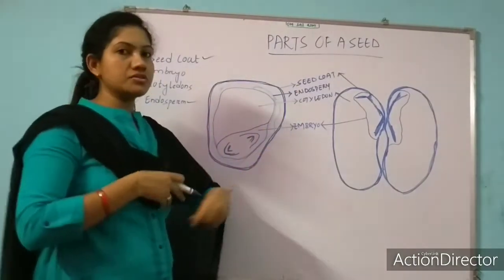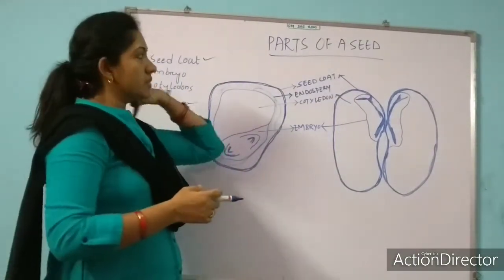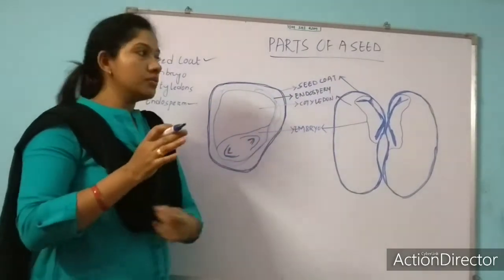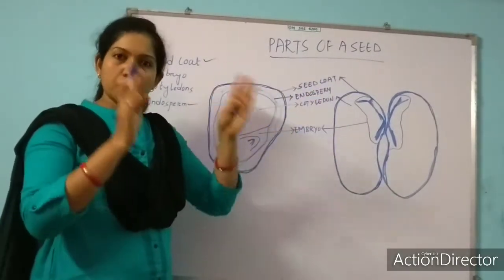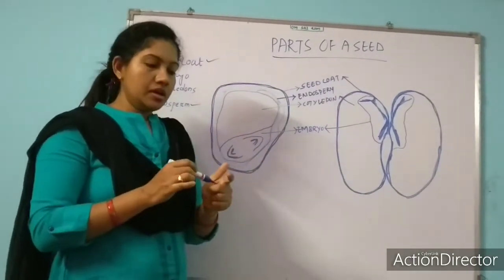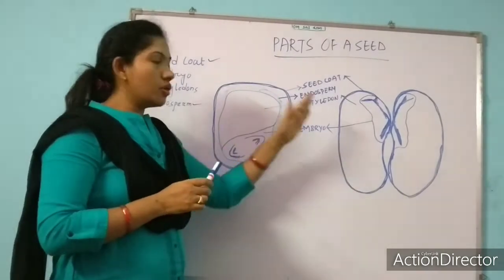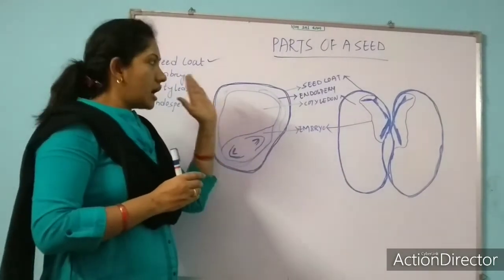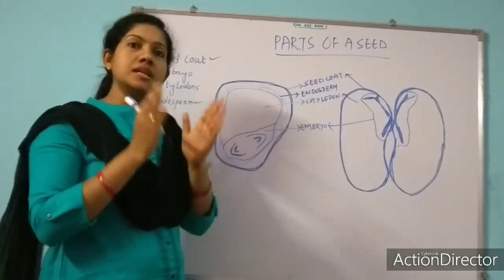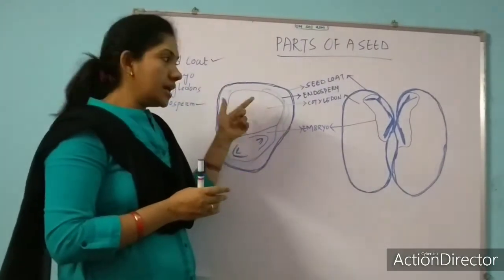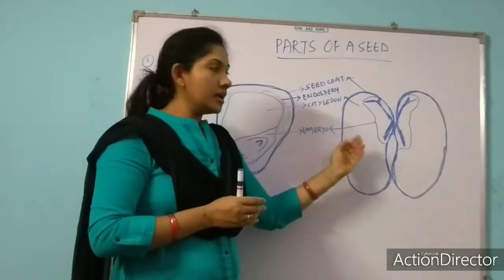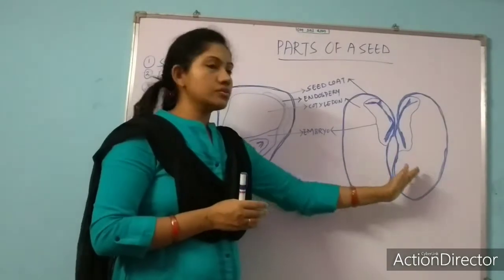So these are the four parts we have discussed. The first part is the covering of the seed — we call it seed coat, which protects the seed. After seed coat we got endosperm, which is distinct in monocot but not clearly visible in dicot seeds. After endosperm we got cotyledons — the first leaf of the seed. Monocot seed has a single cotyledon and dicot seed has two cotyledons.